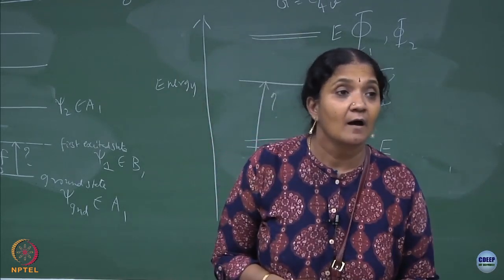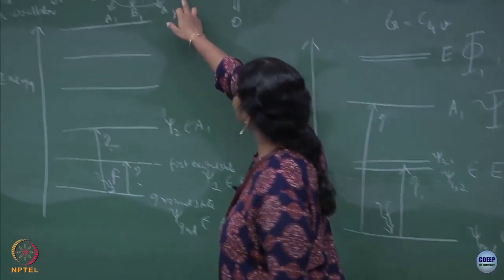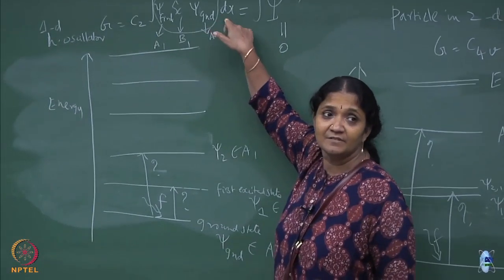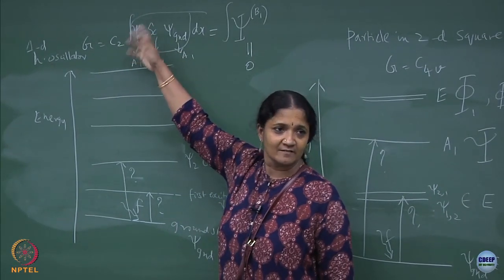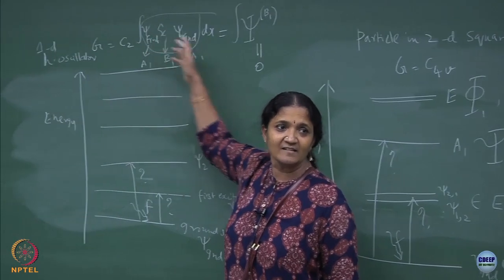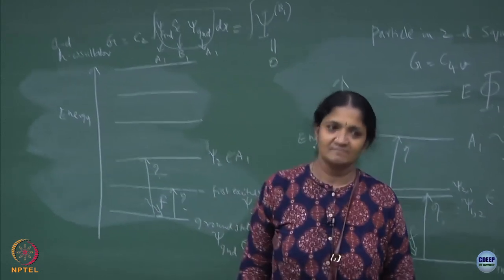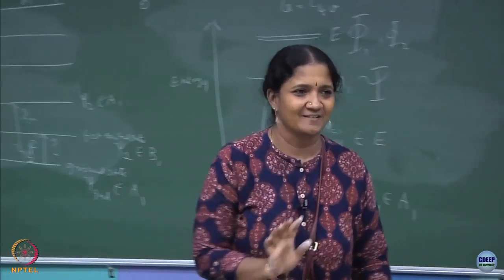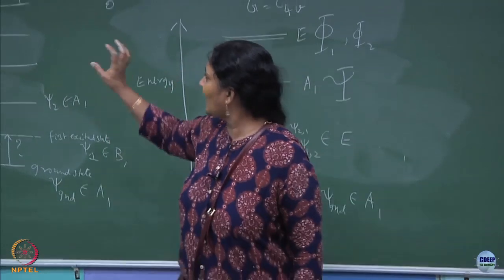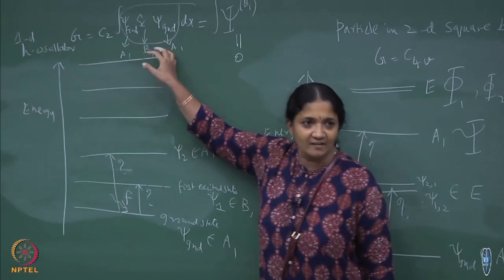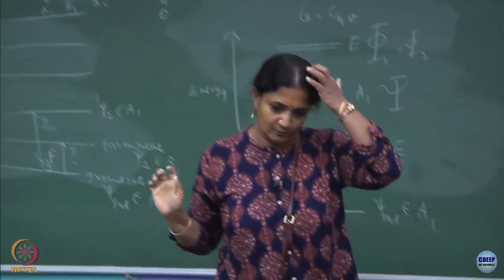This is a dx integration going from minus infinity to plus infinity. If you do any change of x to minus x, this answer will become minus of itself — that is all I am trying to say. But this is an odd-even argument, and I am also trying to tell you how to see this from group theory. I have still not proved to you that this is 0, which I will prove now.